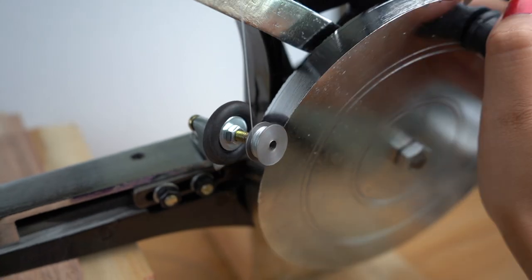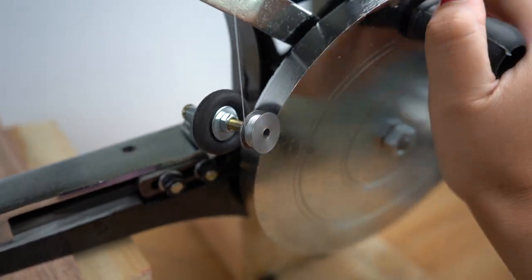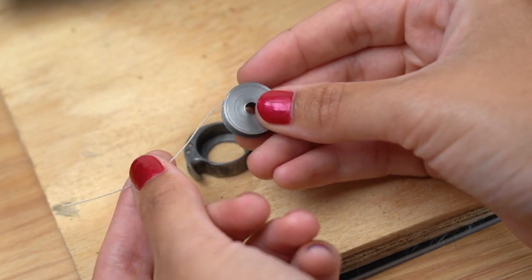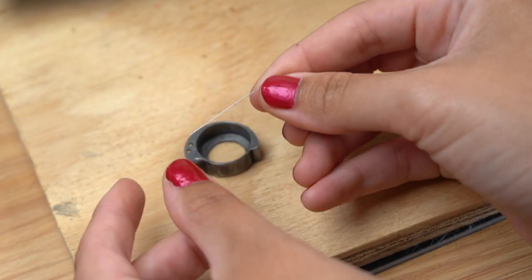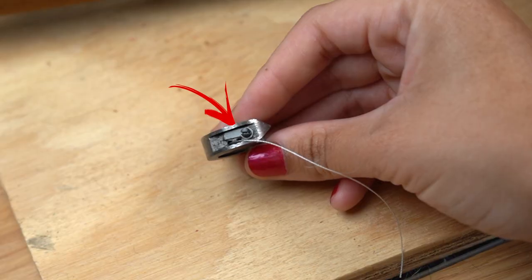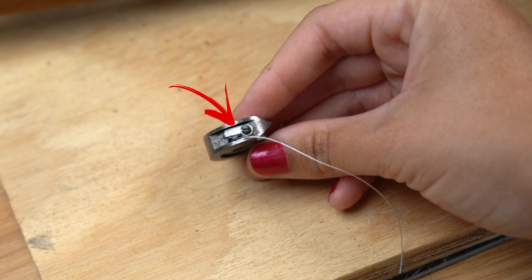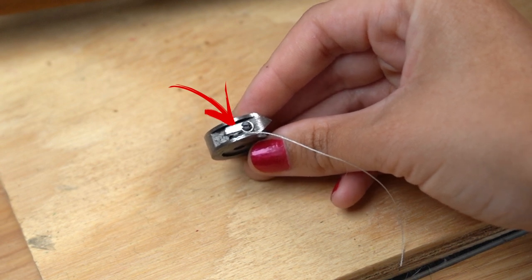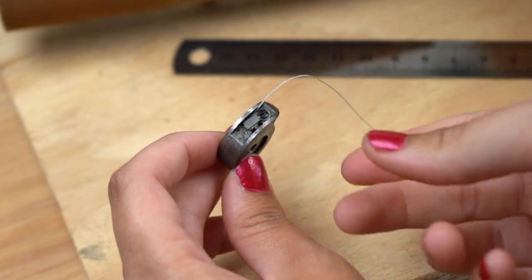With our newly winded bobbin, remember that the thread should always be coming out from the back pulling to the left and then we're going to take that thread and put it through the first hole. Now I wanted to mention that this tension disc is really important for when you're sewing. You'll need to wrap the thread around this disc and then put the thread out through the second or bottom hole.